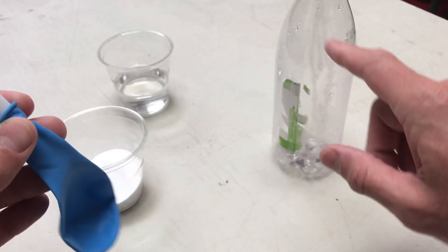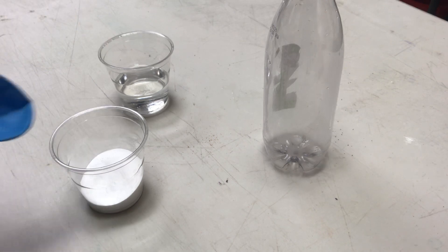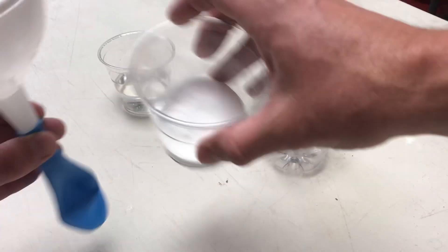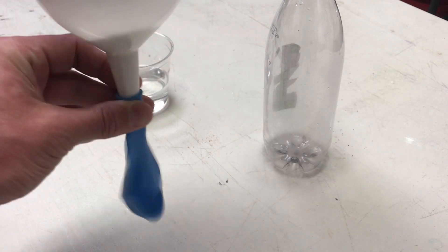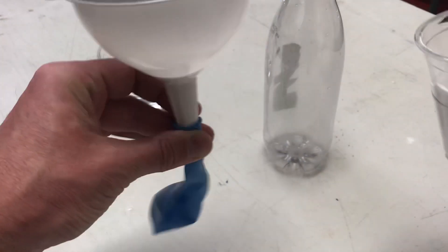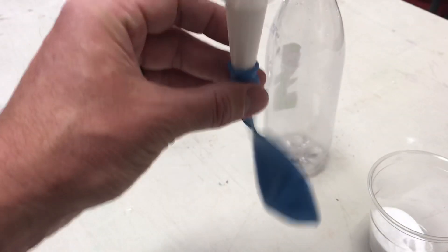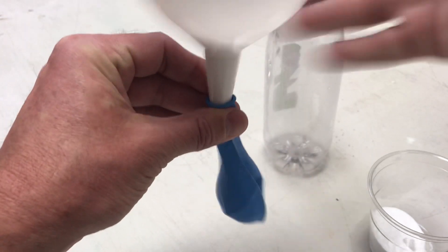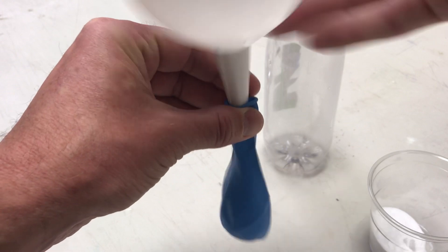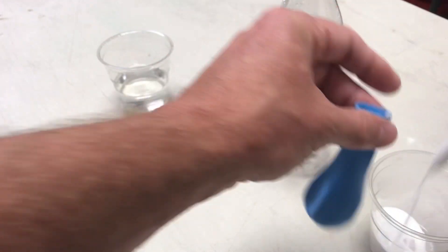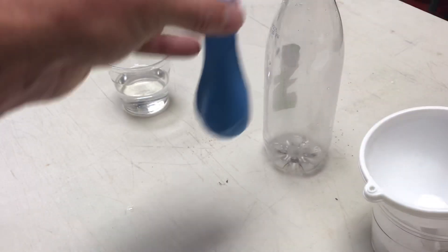So all we have is a balloon, a funnel, an empty bottle, some vinegar, and some baking soda. I just take a nice amount of baking soda and work it down in here. All right, let's see, that's a pretty decent amount I think.